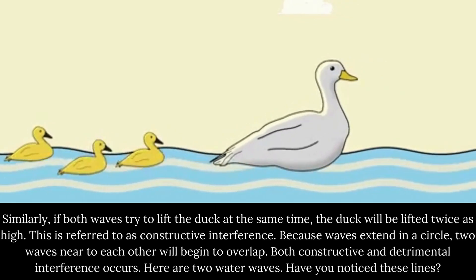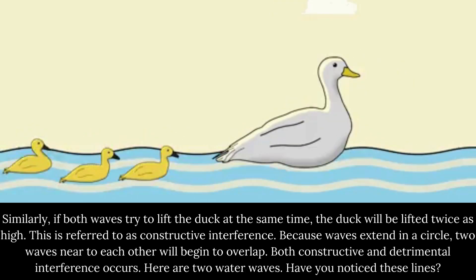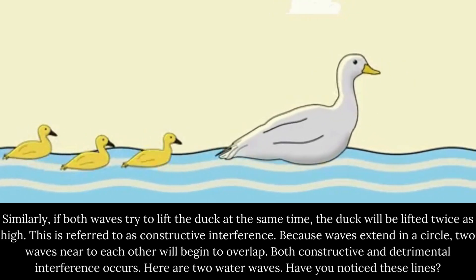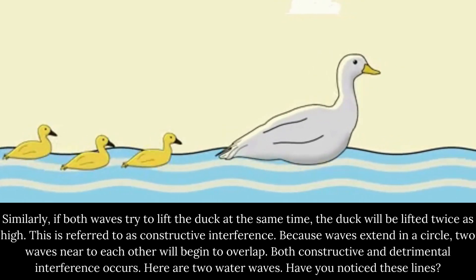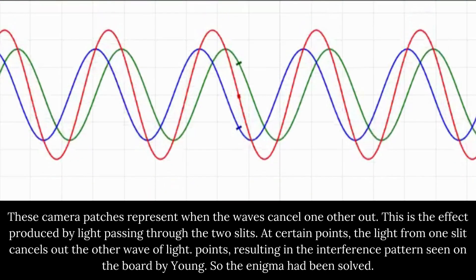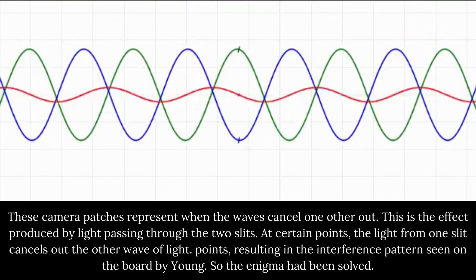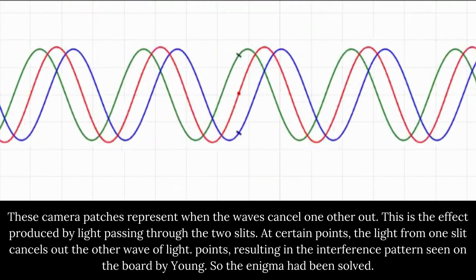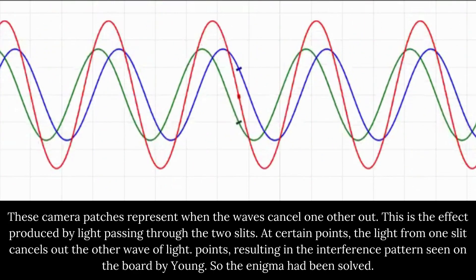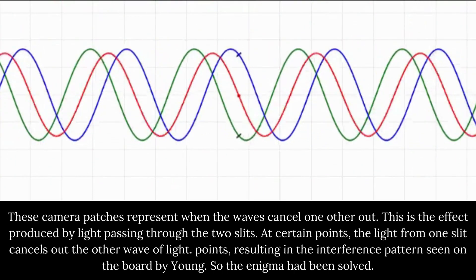Because waves extend in a circle, two waves near to each other will begin to overlap. Both constructive and destructive interference occurs. Here are two water waves. Have you noticed these lines? These calmer patches represent when the waves cancel one other out. This is the effect produced by light passing through the two slits. At certain points, the light from one slit cancels out the other wave of light, resulting in the interference pattern seen on the board by Young.